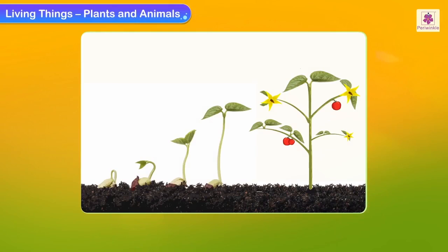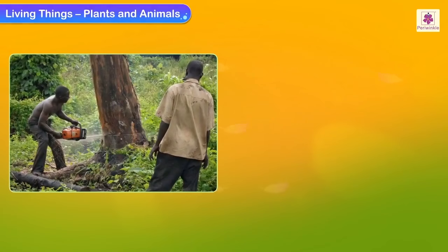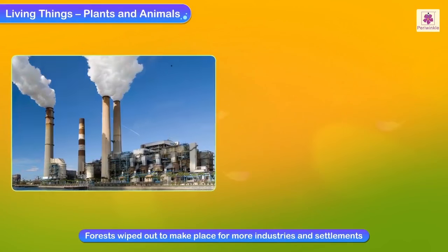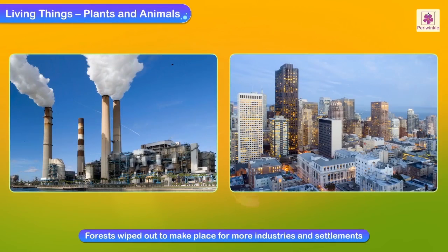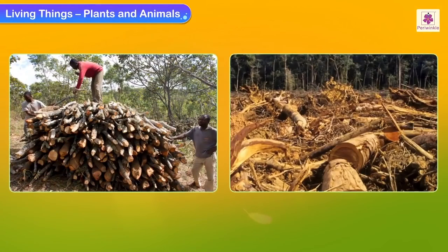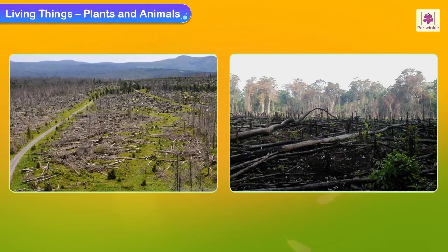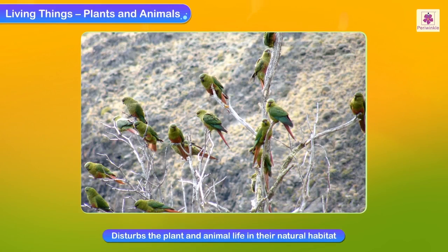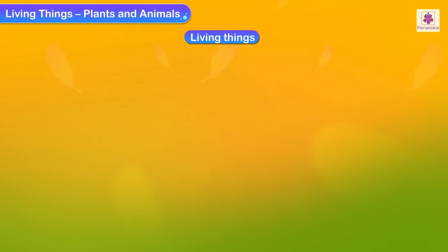For the healthy survival of the earth, man has wiped out forests in order to make place for more industries and settlements. This activity is known as deforestation. Deforestation has disturbed the relationship between natural things in the environment and also disturbs the plant and animal life in their natural habitat.